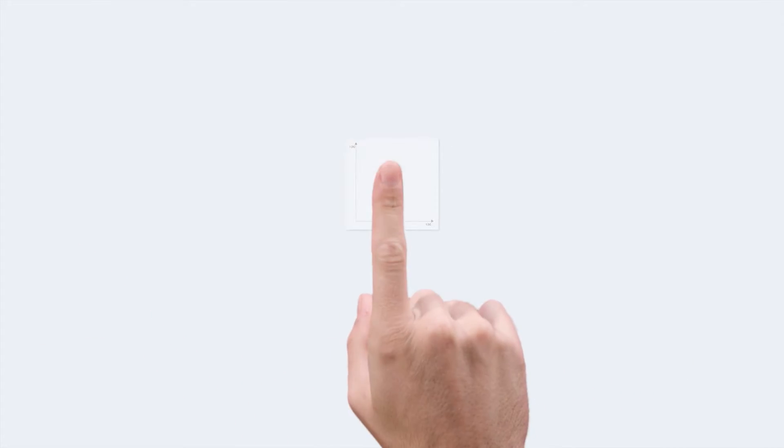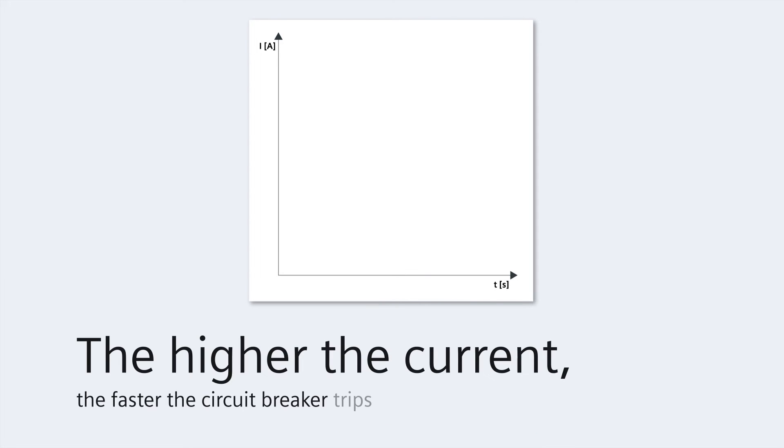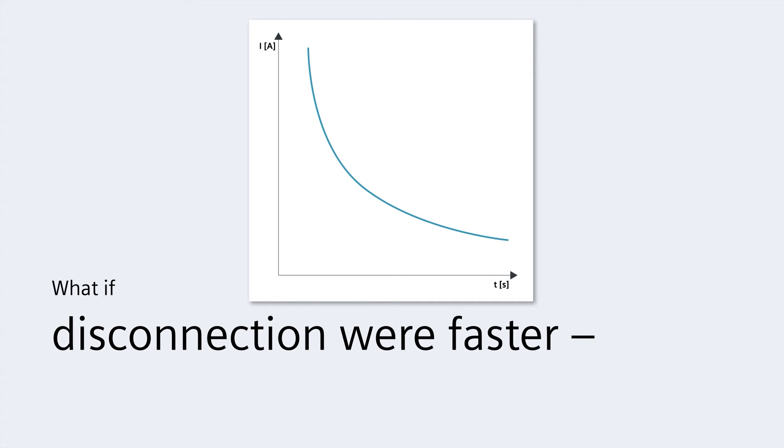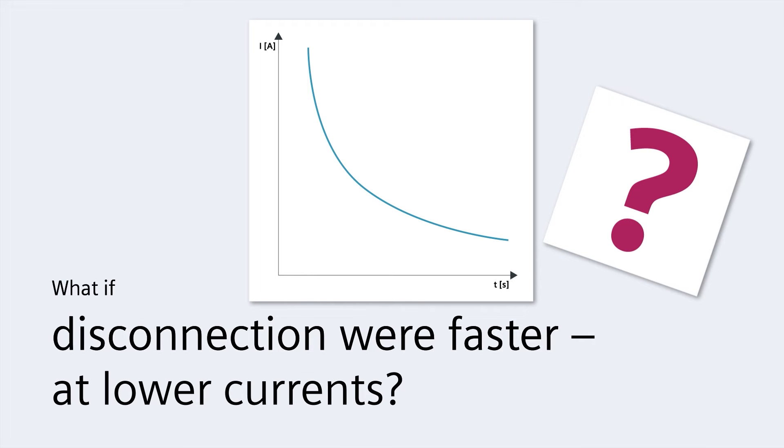A miniature circuit breaker's tripping characteristic looks like this. The higher the current, the faster the circuit breaker trips. Wouldn't it be much better if defective outputs were disconnected much more quickly and at much lower currents?